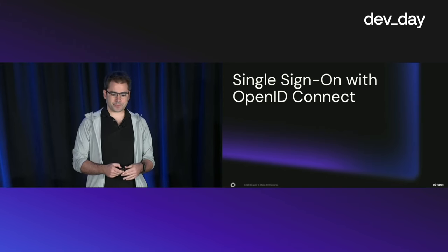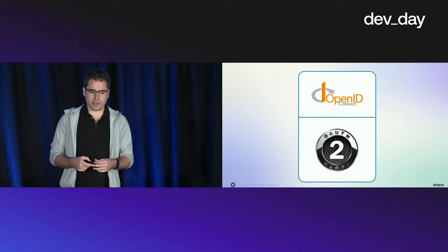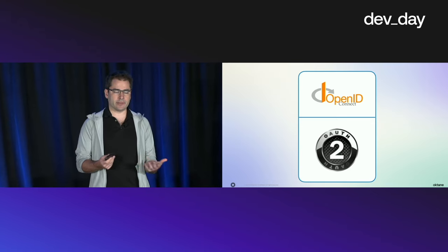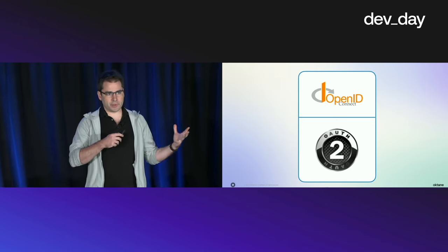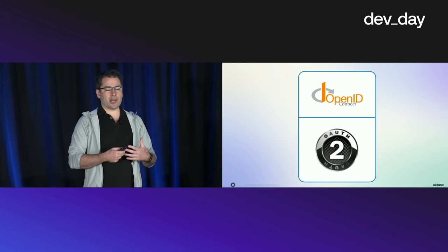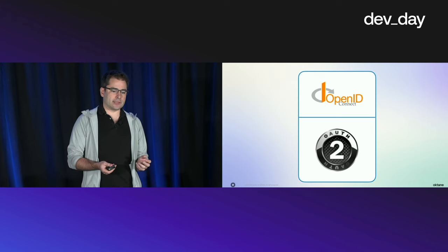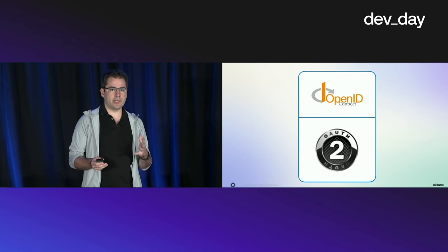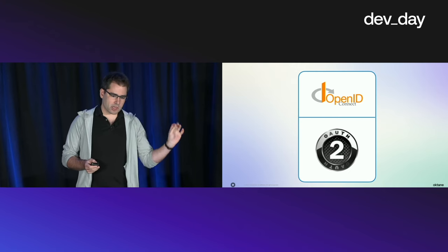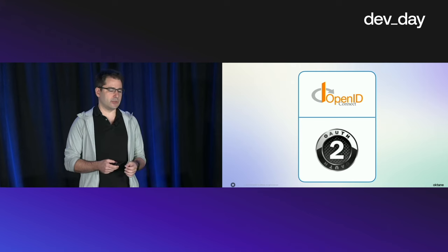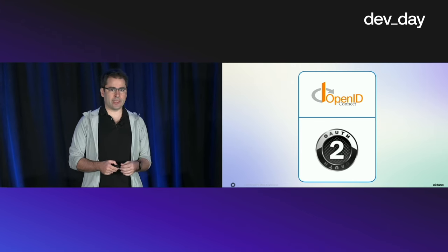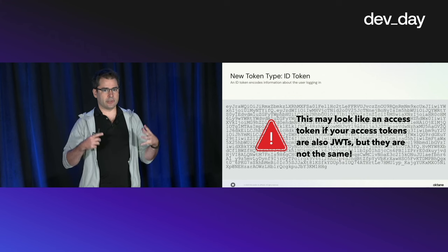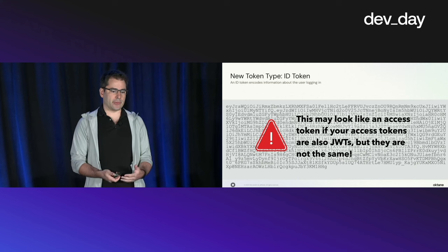OpenID Connect is actually built on top of the OAuth framework. You might be familiar with OAuth from granting third-party access to accounts like Twitter or Facebook, where they need to get data from some API. OpenID Connect is not about getting access to data — it's about signing in. It's a slightly different problem. Because OpenID Connect is built on top of OAuth, most of the concepts apply to both. The main thing you're going to be dealing with in OpenID Connect is called an ID token, which is how the server encodes data about who just logged in and their attributes.